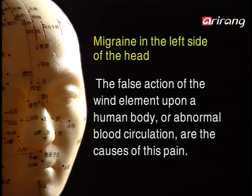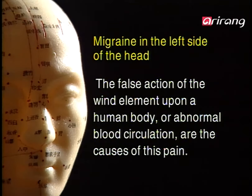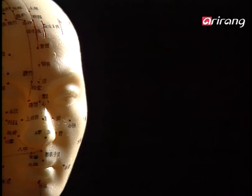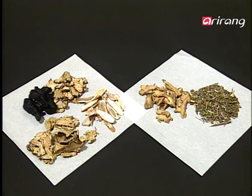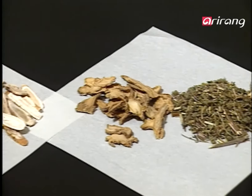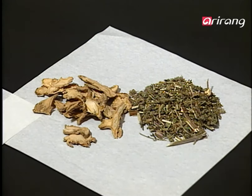The reasons for migraine in the left side of the head divide into two sectors. First, it is due to false action of wind elements in a human body. And secondly, the deficiency of blood causes blood circulation disorder. It is obvious that the patient with migraine in the left side of the head should be treated by therapy which produces blood and eliminates the unhealthy energy.